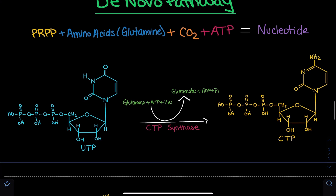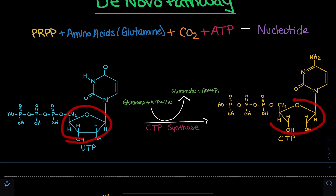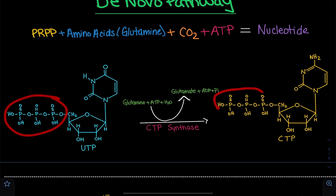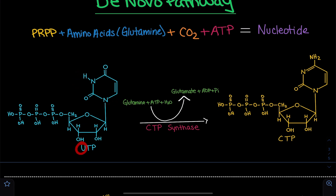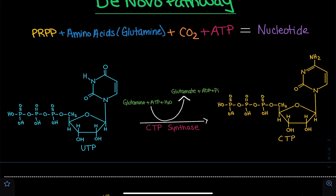We can compare the differences between UTP and CTP. We know the triphosphate part is going to be the same — we simply have a sugar and triphosphates in both. The differences are in the nitrogenous base: here we have uracil, and we want to get to cytosine. The difference is that uracil has a double-bonded oxygen on this carbon, whereas in cytosine we do not have a double-bonded oxygen — instead, we have a nitrogen. So we need a method to incorporate nitrogen into UTP and get rid of that oxygen.